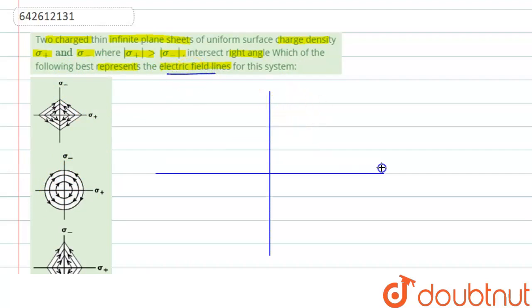So if we take this case, here this is the one infinite sheet. And it has the charge density plus sigma. And this one is having minus sigma. So this is the two infinite plane sheets like this, and they are intersecting at right angle.